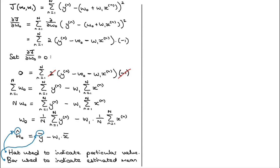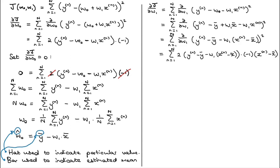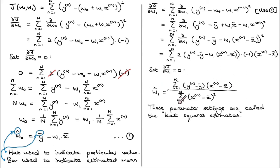Next we take the partial derivative of the loss with respect to w1. Very similarly to w0, we take the partial derivative inside the summation, substitute the optimal estimate for w0 using the equation we just derived, and go through the steps to arrive at an equation for w1-hat. We set the partial derivative equal to zero, and with a bit of manipulation we get the analytic result for w1-hat. We now have analytic equations that tell us how to calculate the optimal solutions for both w0 and w1. These particular settings are sometimes referred to as the least squares estimates.